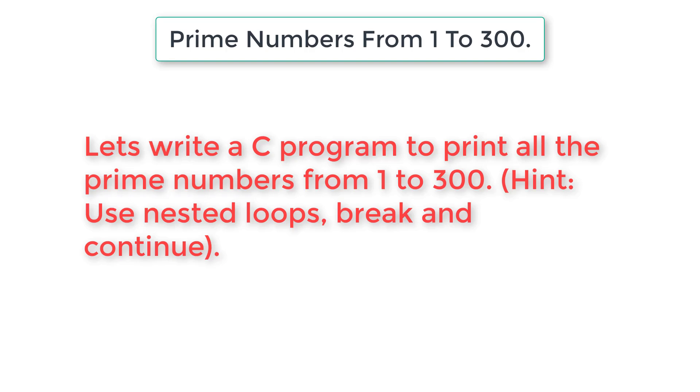Let's write a C program to print all the prime numbers between 1 and 300. We need to use nested for loop, break and continue statements.